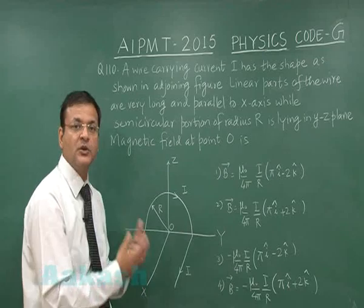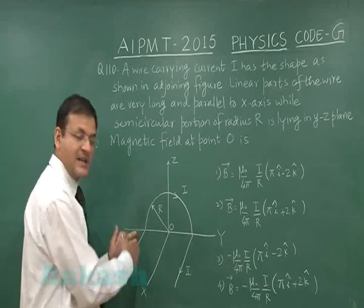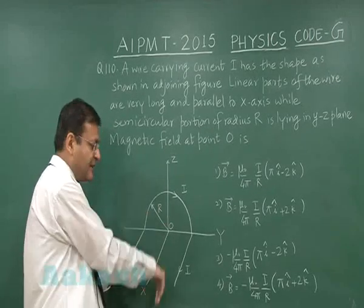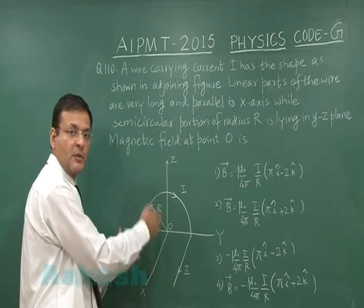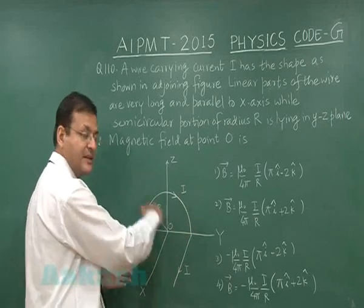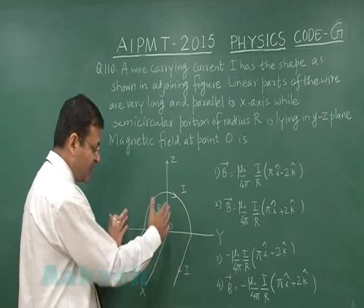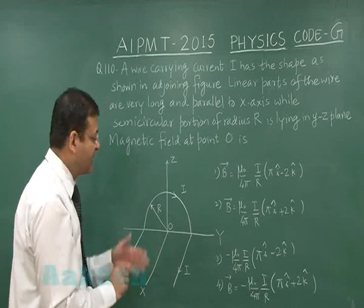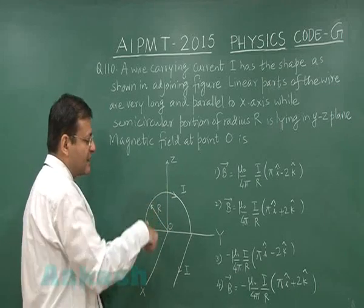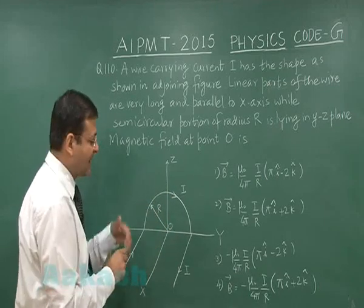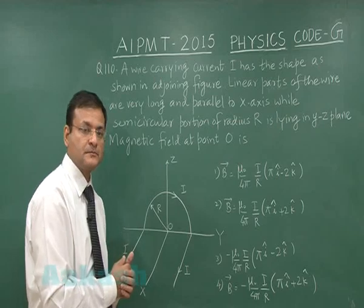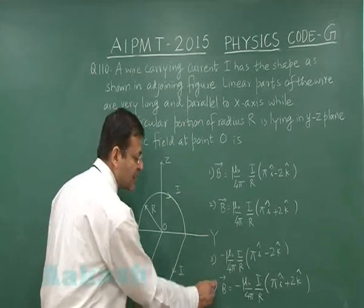You will find that just by looking at the direction of magnetic field, you can mark the answer. You need not do the total calculation. Since this straight portion is coming from you to this point, the magnetic field will be downward, that is minus z direction or minus k cap direction. Same will be the case for this straight wire also - it is going towards you, so here also the magnetic field direction will be downward. These two parallel wires will be making a contribution of magnetic field in minus k cap direction. And if you see the semicircular part, then the direction of magnetic field will be inside the board, and that is minus x, so minus i and minus k should be there in your answer.